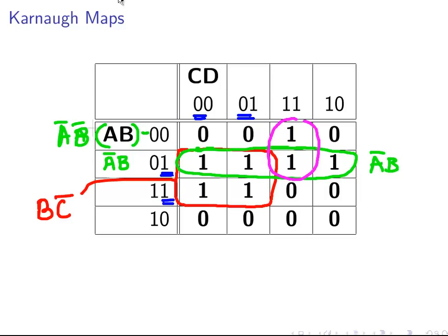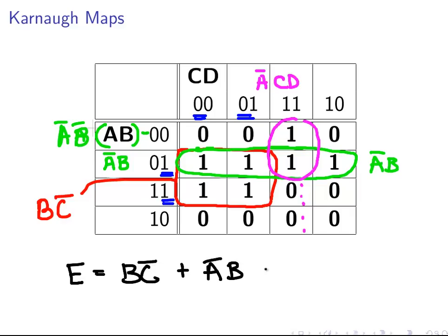And what about this pink area over here? Well, we don't really have that much of a way of describing it broadly. This here is C and D, but that would describe the whole column. So what describes only the top half of the column is not A, C, D. So we can express the full expression as: E equals B, not C, plus not A, B, plus not A, C, D. And that answers the question.